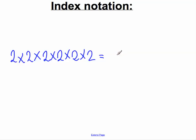And they would say: what's the number we're multiplying by itself? Well, it's two. And how many times are we multiplying it by itself? Six. And they would say: two to the power of six. That means two multiplied by itself six times.